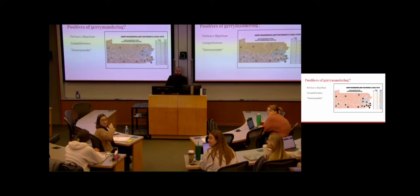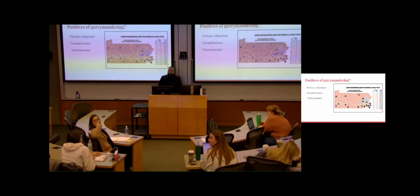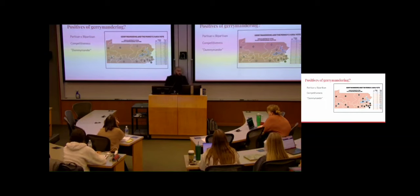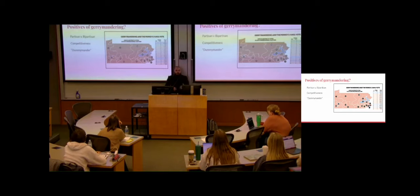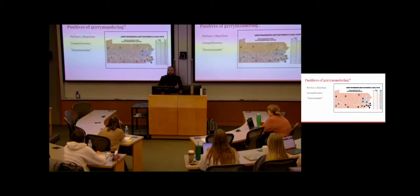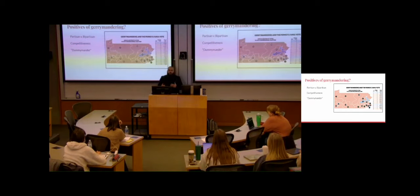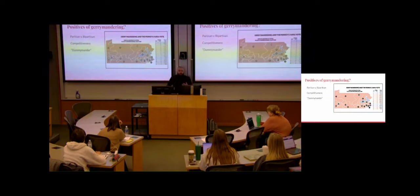Partisan gerrymandering is where you create strongholds — Democrats win by 60-40 margins all the time. Bipartisan gerrymandering is less common in terms of news coverage, but actually more common in the United States. What bipartisan gerrymandering is, essentially, is instead of drawing a political advantage, the incumbents get the safest districts possible. This results in districts that are 75-25, and the incumbent has no fear of not getting reelected. You call it bipartisan because both parties have a vested interest in not having competitive districts — therefore they can basically stay permanent.